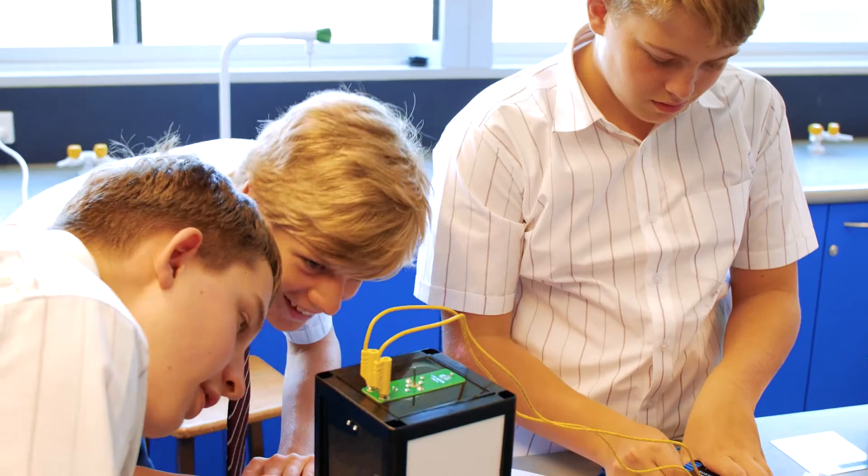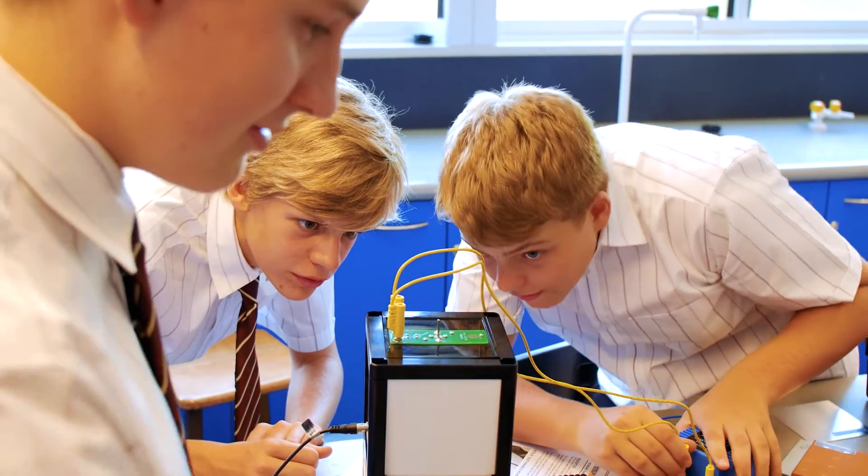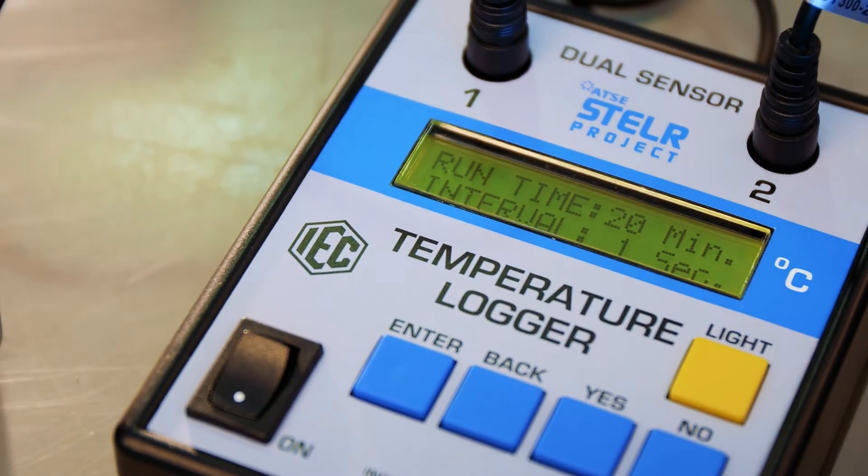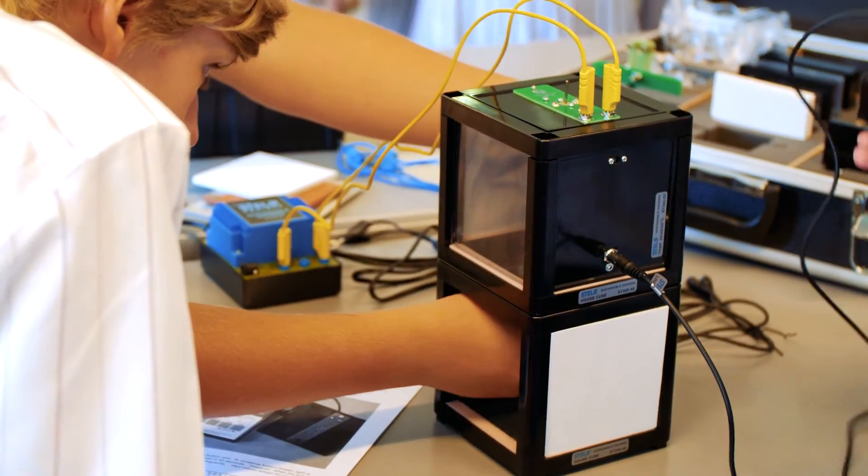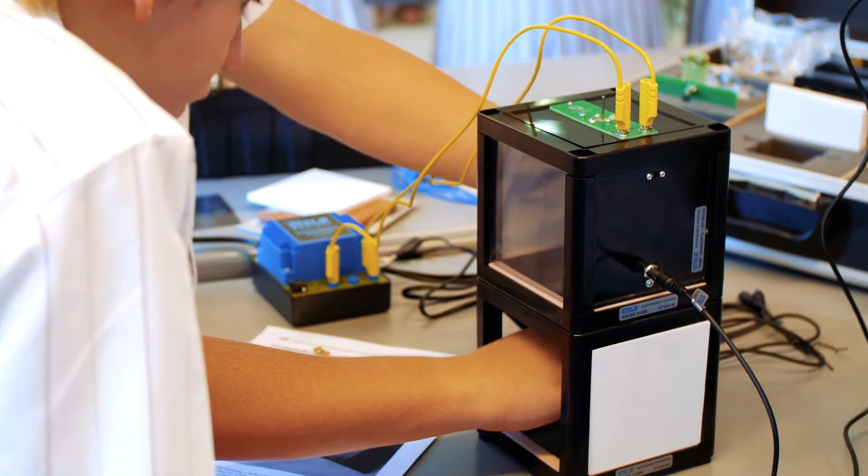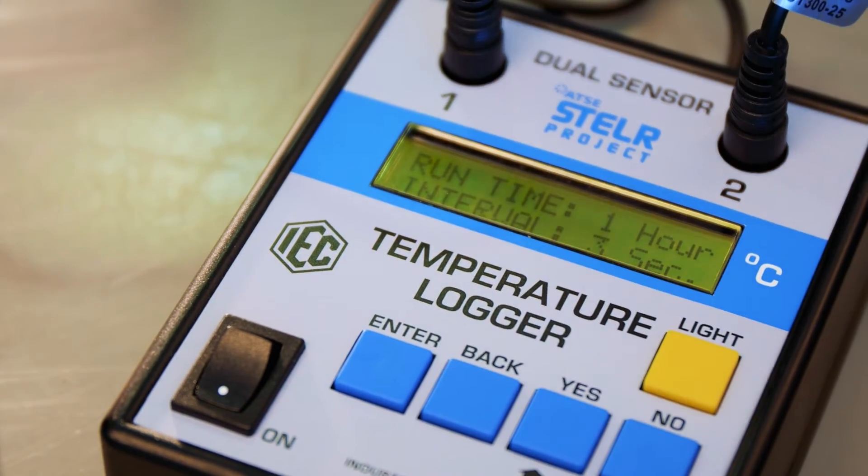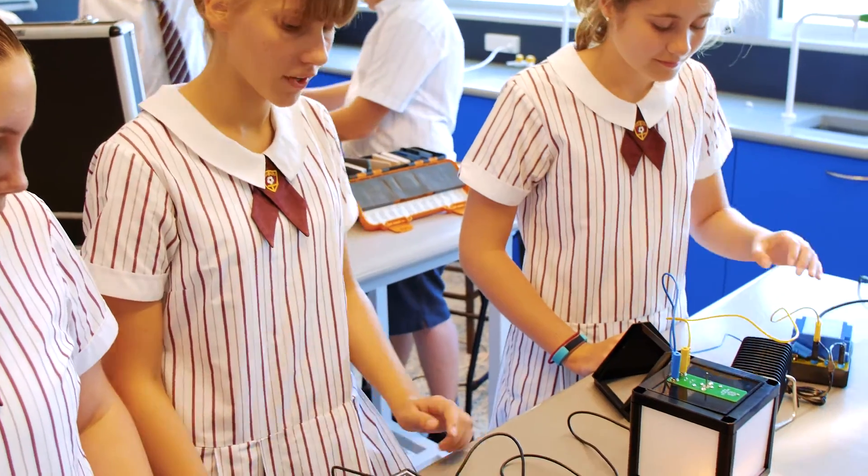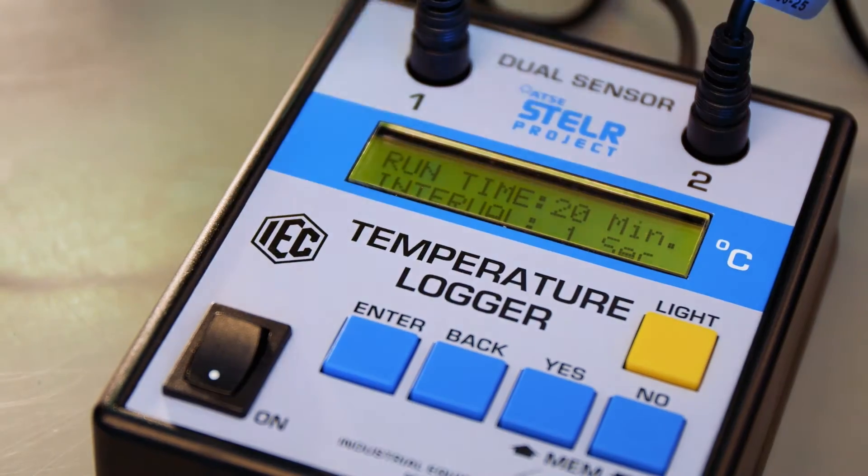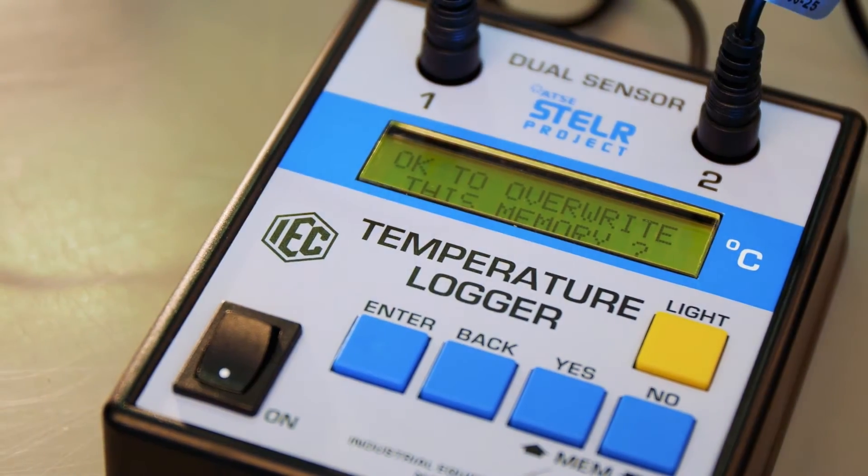The data logger will record the temperature at different time intervals. One second it will record for 20 minutes. We can record every two seconds for 40 minutes. Three seconds for one hour. We're going to go back to every one second for this case. One second there and we press enter.